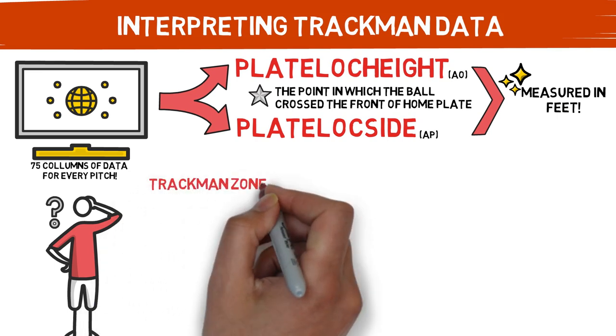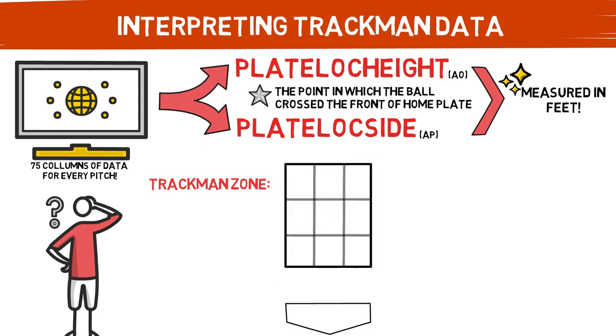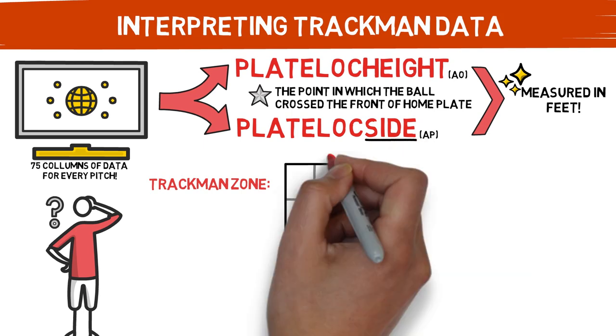Now let's take a look at your typical strike zone to gain a better understanding of these variables, starting with plate-loc side. Plate-loc side is the measure of how many feet a pitch was from the center of the plate. So your midpoint in the zone would read as 0.0 on plate-loc side. If you are behind home plate, negative numbers appear to be to the left of this middle point and positive numbers to the right.